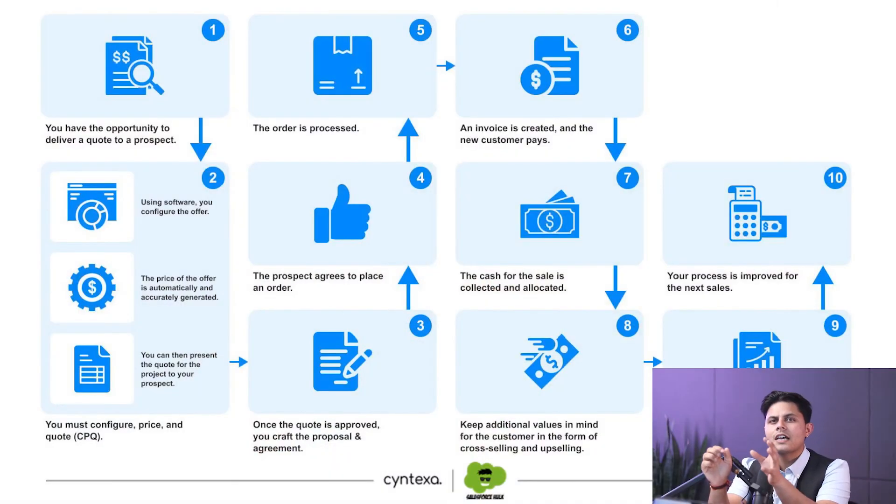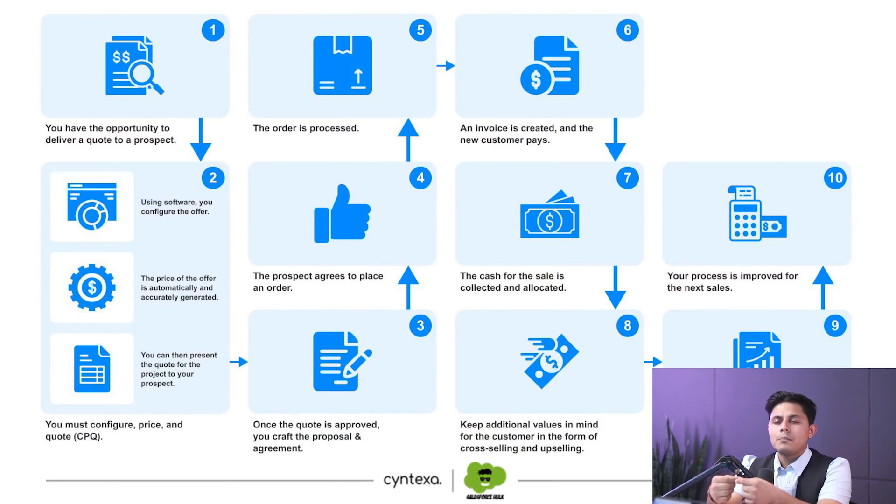This is quote-to-cash, and it's a very important part of Salesforce CPQ — without it the complete sales cycle cannot be managed. We can primarily divide it into two parts: one takes care of product configuration, pricing, and quotation; the other takes care of billing and order fulfillment.